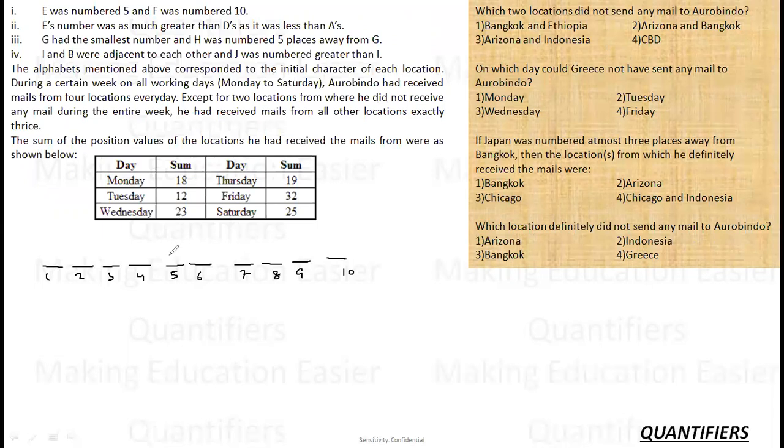E was number 5 and F was number 10. E's number was as much greater than D as it was less than A, which means D will fall to this side of spectrum and A will fall to this side. G had the smallest number and H was 5 places away from G. So G was the smallest one and H was 5 places away, so H was here.